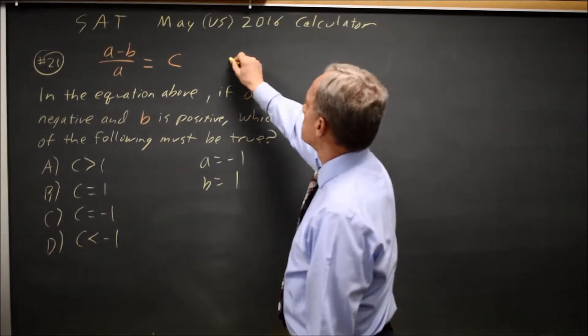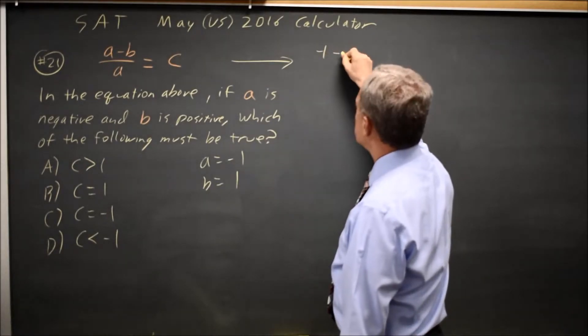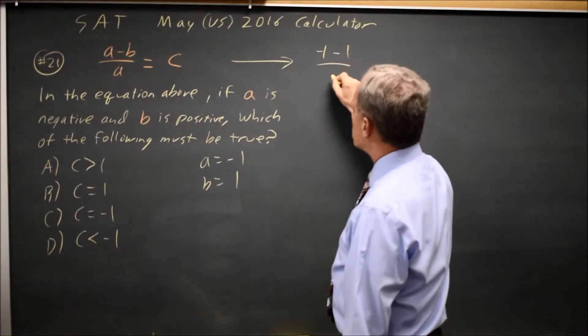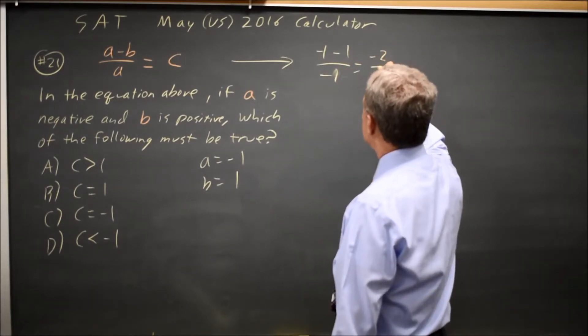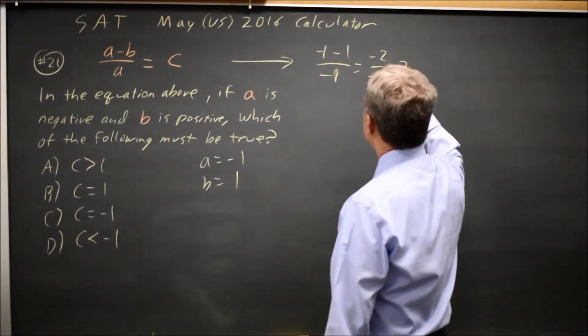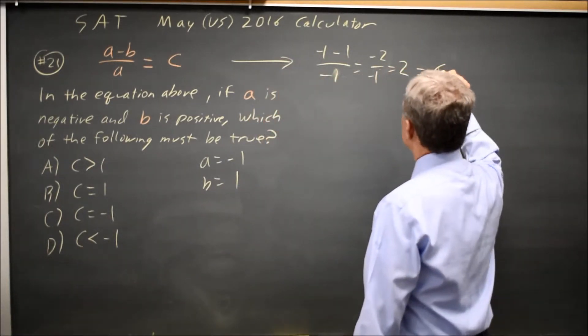So A is negative and B is positive. This becomes negative 1 minus B, so negative 1 minus 1. So that's negative 2 over negative 1, which is positive 2, and that's equal to C, according to this equation.